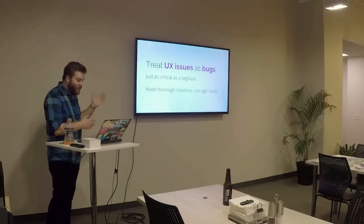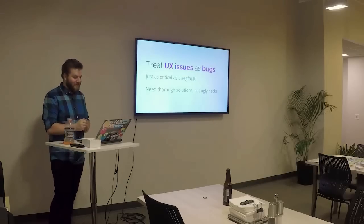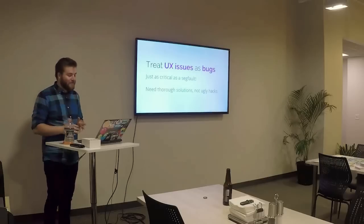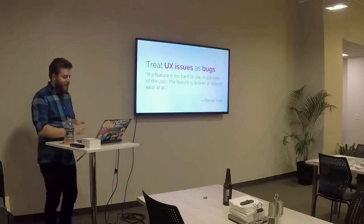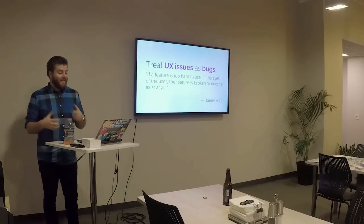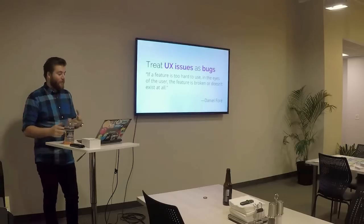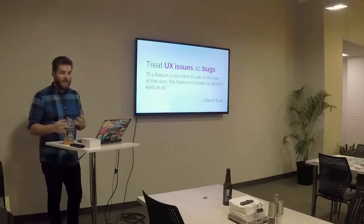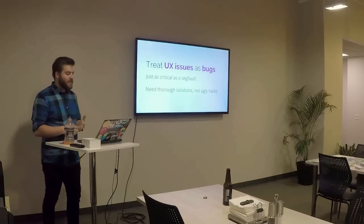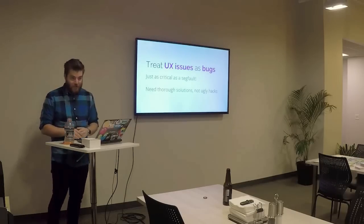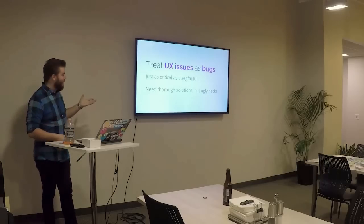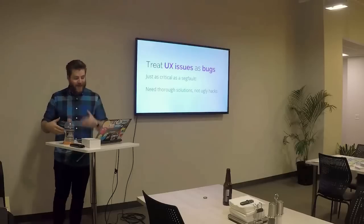Here's an easy one: treat UX issues as critical bugs. A poor user experience is just as critical as a segfault - they both leave a nasty taste in the user's mouth and make it more likely that they'll go look somewhere else. If a feature is too hard to use, then in the eyes of the user that feature is broken or doesn't even exist. So you should treat these things as if the feature is completely broken if it has a poor UX.